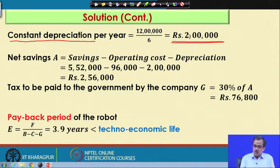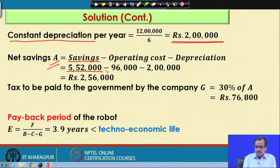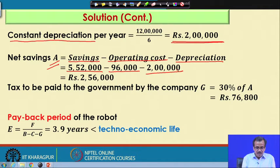This is almost similar to the standard deduction whenever we calculate our income tax. Now, the net saving denoted by A is nothing but the saving — which I have already calculated as rupees 5,52,000 — minus the operating cost of 96,000, and depreciation is nothing but rupees 2 lakhs. If you calculate the net saving, this will become equal to rupees 2,56,000.